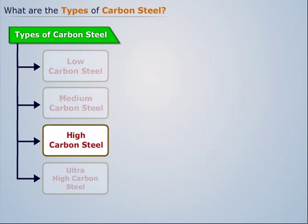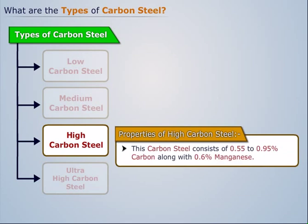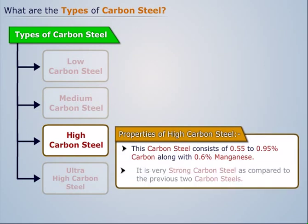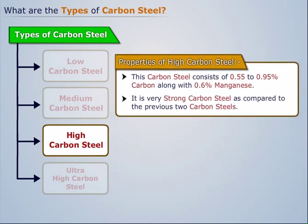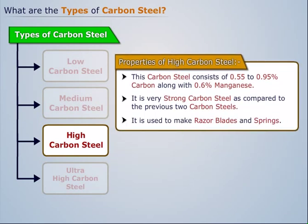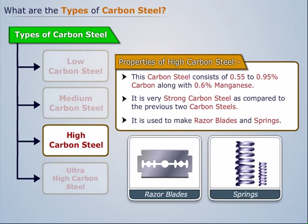High carbon steel consists of 0.55 to 0.95% carbon along with 0.6% manganese. It is very strong carbon steel as compared to the previous two carbon steels. It is used to make razor blades and springs.